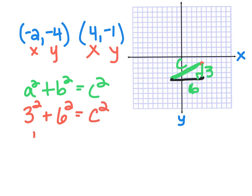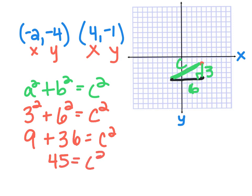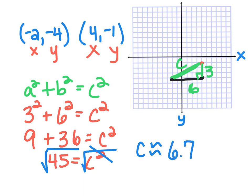Now I'll fill in the Pythagorean theorem. My two legs are three and six, so: three squared plus six squared equals C squared. Three squared is nine, six squared is 36, so nine plus 36 equals C squared. Nine plus 36 is 45, so 45 equals C squared. To solve, take the square root of both sides. The square root of 45 is approximately 6.7. So this diagonal length is about 6.7 units long.